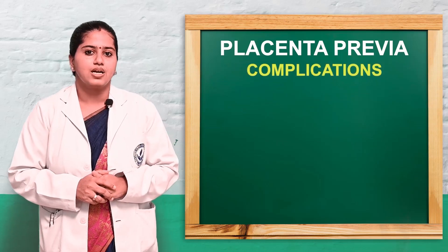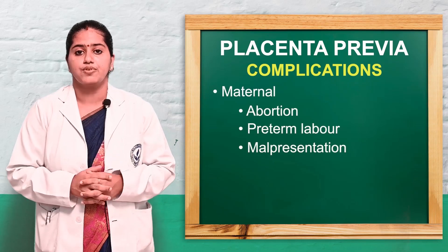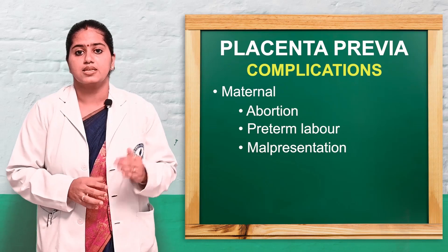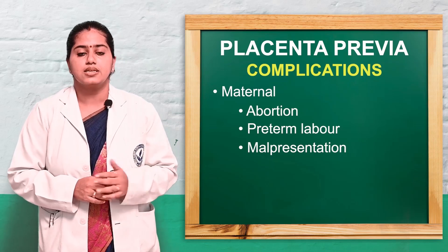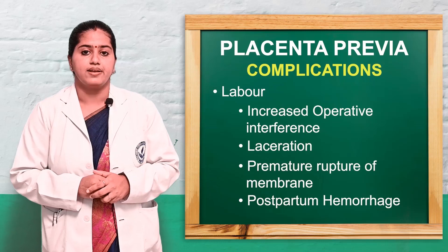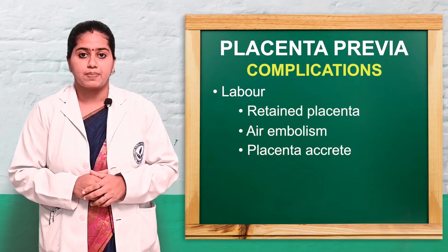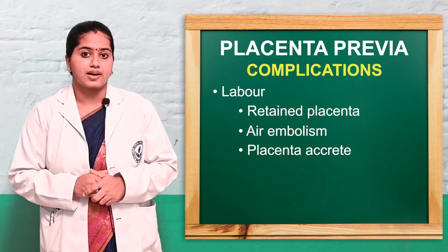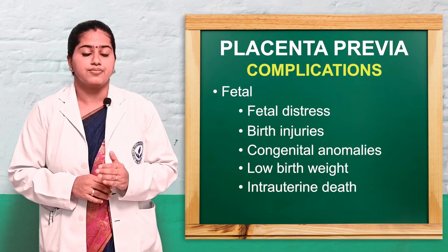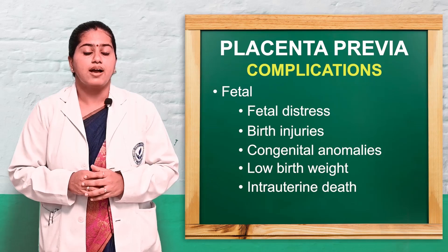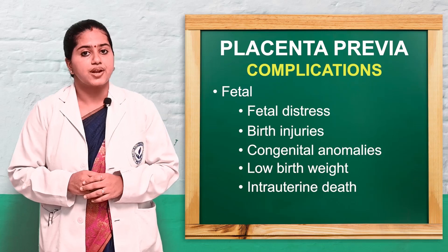Complications for the pregnant woman include abortion, preterm labor, and malpresentation. During labor there may be increased operative deliveries, lacerations, premature rupture of membranes, PPH, retained placenta, air embolism, and placenta accreta. For the fetus, complications include fetal distress, birth injuries, congenital anomalies, low birth weight, and intrauterine death.